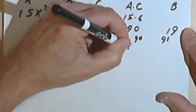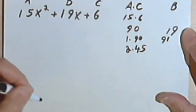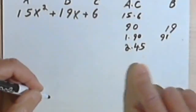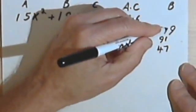90 is even, so I could divide it by 2. I could have 2 times 45, but 2 plus 45 is only 47, which is way too big. I want 19.